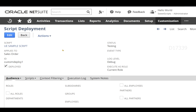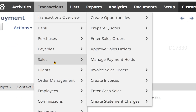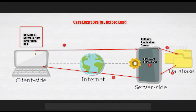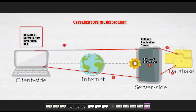Let's test our user event script. Since we deployed our script on the sales order record, I'm going to navigate to Transactions > Sales and click Enter Sales Order. Now when I click Enter Sales Order from the browser on the client side, the request gets sent to the NetSuite application server. The application server will try to find the Enter Sales Order page in the database, and once that page is available it will be loaded back to the server. Since we have deployed our user event script on the sales order record, and this is a server-side script, the before load entry point will get triggered.